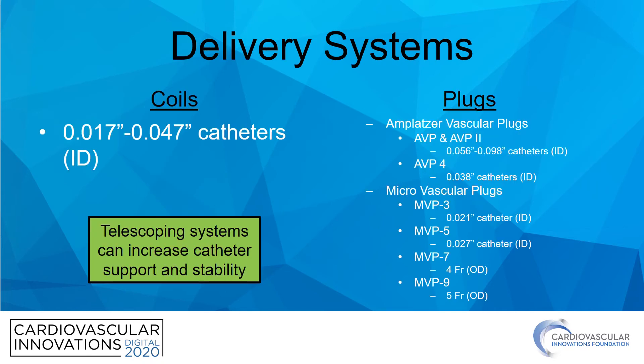It is important to know ahead of time what delivery catheters are required for your embolization devices so that you can avoid scrambling during the actual case. There are too many coils on the market to individually review, but remember that delivery catheters required can range anywhere from an internal diameter of 0.017 inch to 0.047 inch.